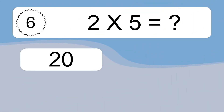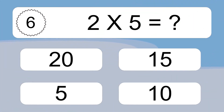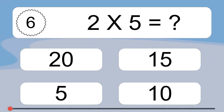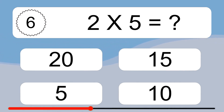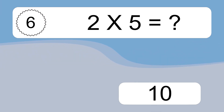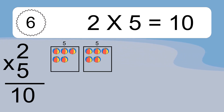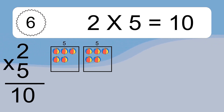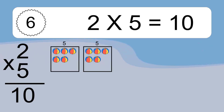2 times 5 equals 10. We have 2 boxes and each box has 5 colorful balls inside. If you count all the balls in all the boxes together, you will have 2 times 5 balls. This equals 10 balls.